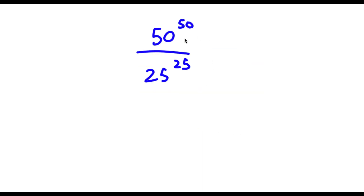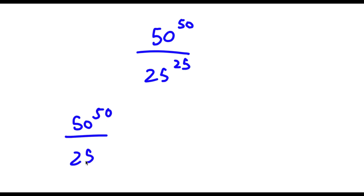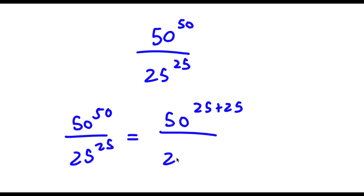Alright, so I have 50 to the power of 50 over 25 to the power of 25. I can rewrite this as 50 to the power of 25 plus 25, over 25 to the power of 25, because 50 is the same thing as 25 plus 25.